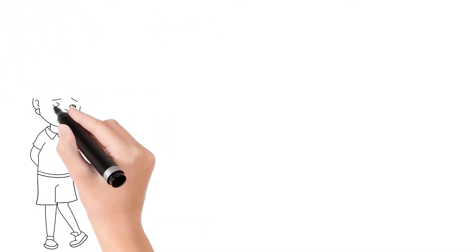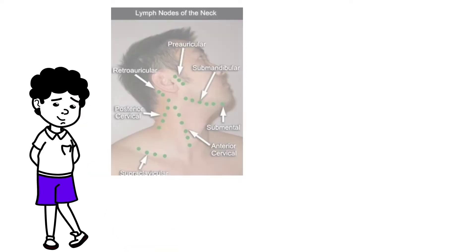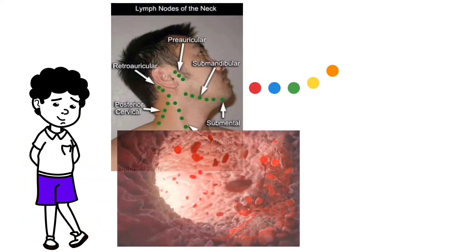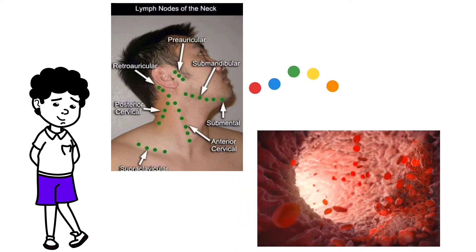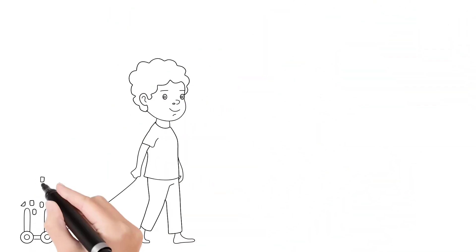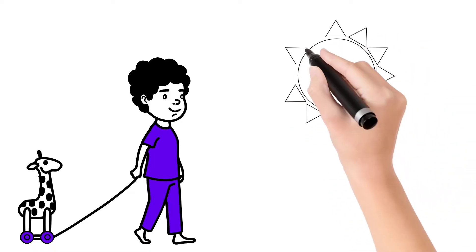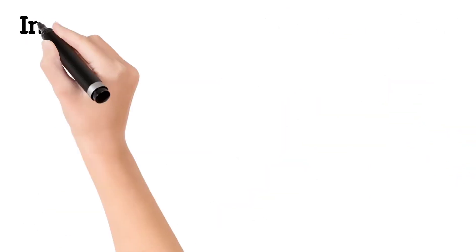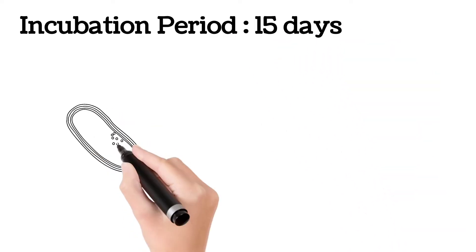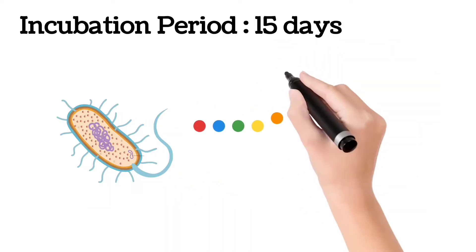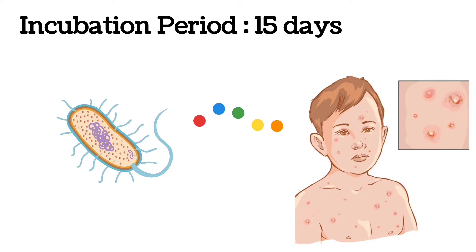Once the virus enters the body, it enters the lymph nodes and gradually multiplies, and finally it enters into the bloodstream causing the symptoms. Chickenpox is usually seen in children and is most predominantly seen in summer, and the incubation period of chickenpox is 15 days — meaning once the virus enters the body, it shows symptoms after 15 days.